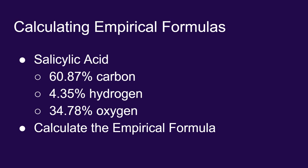When analyzed, it is found that 60.87% of the mass of salicylic acid is composed of carbon, 4.35% of the mass is hydrogen, and 34.78% of the mass is oxygen. With this information, we should be able to calculate the empirical formula.